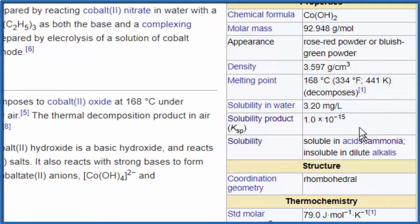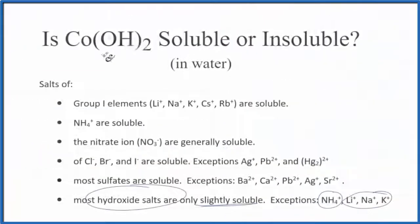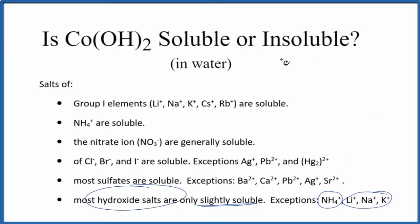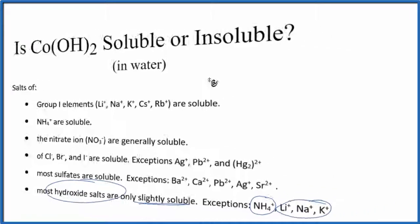So based on our rules and this data, we can say that cobalt-2-hydroxide is slightly soluble or insoluble in water. When we do net ionic equations and things in chemistry, we often consider slightly soluble to be the same as insoluble. This is Dr. B — thanks for watching.